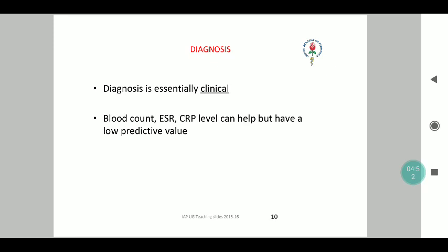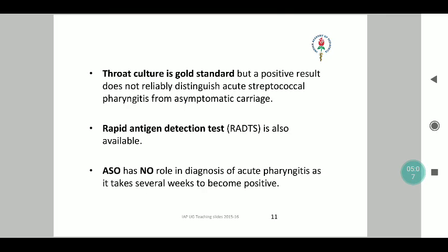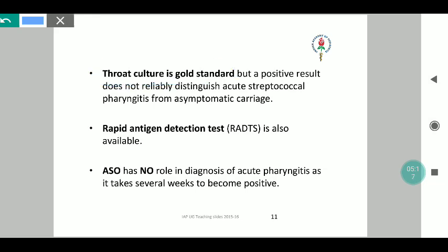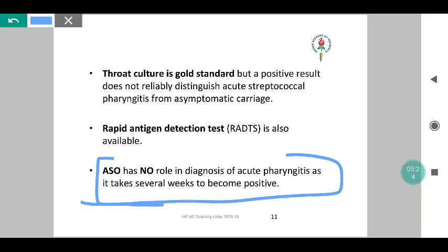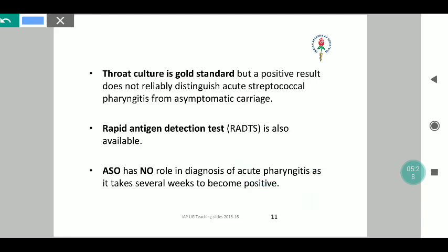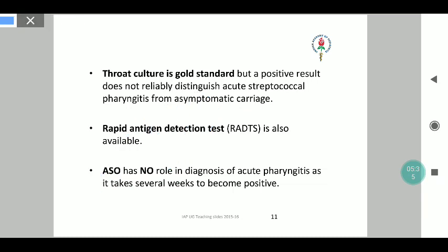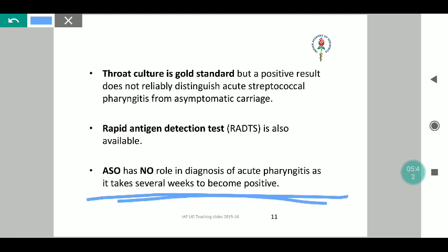The diagnosis is almost always clinical. Investigations such as complete blood count, ESR and CRP might help but have a comparatively low predictive value. For group A beta-hemolytic streptococci, the gold standard investigation is throat swab culture. Rapid antigen detection tests are also available. ASO titers have no role in diagnosis of acute pharyngitis because it takes several weeks to come positive; ASO is more limited towards rheumatic fever and rheumatic heart disease, proving past infection but not current infection.